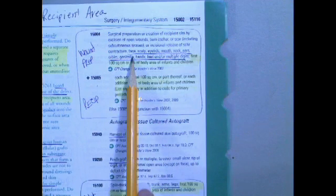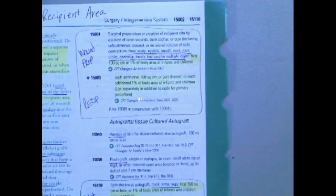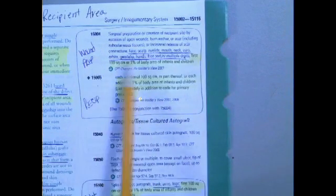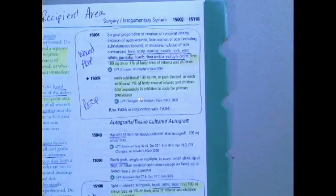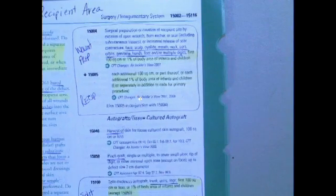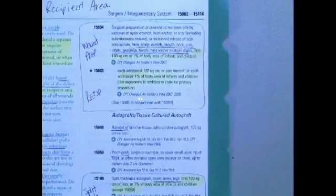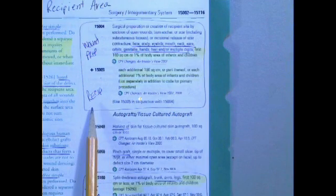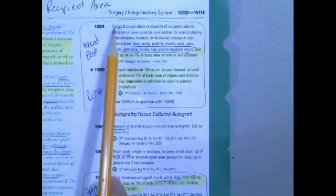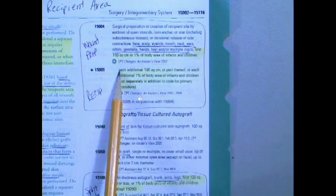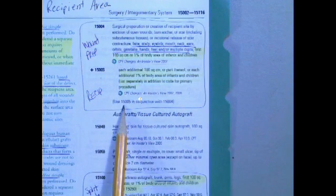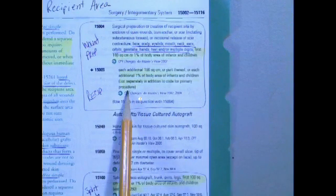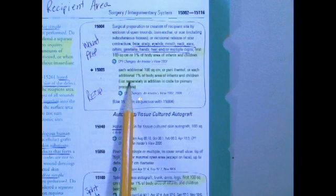15002 which bubbles in its indented code 15003 and then 15004 which bubbles in the add-on code 15005. The difference between the two is location, location, location. Alright, so 002 is trunk, arms or legs and 004 is pretty much everything else. Bubbling and highlighting is a trademarked technique that we're known for as well and this is how you do it. It's actually quite simple. You just bubble in the parent code, the non-indented one with any indented codes and parenthetical notes and that becomes your bubble. And then you highlight everything